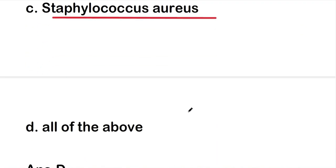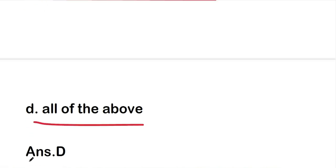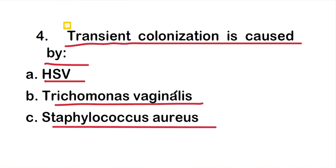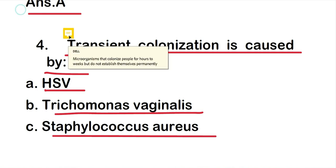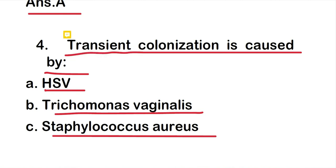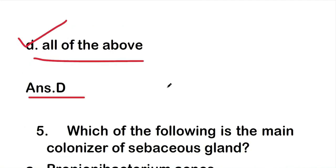Question 4: Transient colonization is caused by — HSV, Trichomonas vaginalis, Staphylococcus aureus, or all of the above? The right answer is option D: all of the above. Transient colonization is caused by HSV, Trichomonas vaginalis, and Staphylococcus aureus. Transient colonization means microorganisms that colonize people for hours to weeks but do not establish themselves permanently.